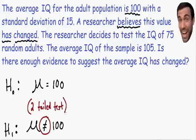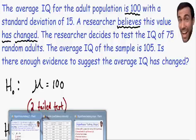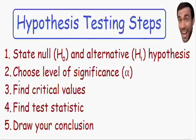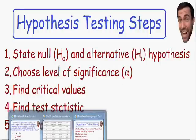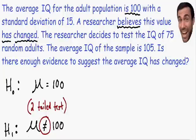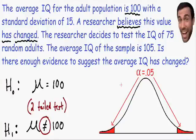Now that we have stated our null and alternative hypothesis, let's move on to step number two: choose our level of significance, written with the Greek letter alpha. Sometimes the level of significance is given to you in the problem; if not, you need to choose it. The level of significance is just the area in the tails. Let me draw the normal curve to show you what this means.